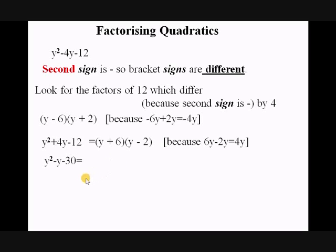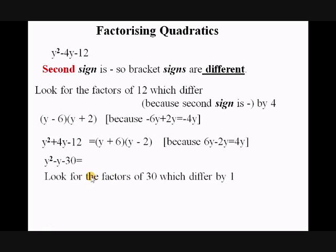Let's look at this one. The bracket signs are going to be different, and we're looking for the factors of 30 which differ by 1, because the coefficient of y is 1. That's 5 and 6: 5 × 6 = 30 and 6 − 5 = 1. Because we want minus y, we put the minus sign in front of the biggest factor — which is 6. So it's (y − 6)(y + 5). You can multiply that out to check it gives what we started with.